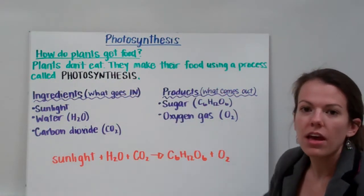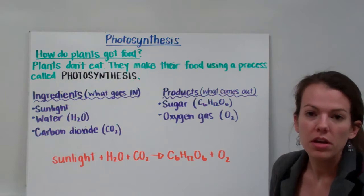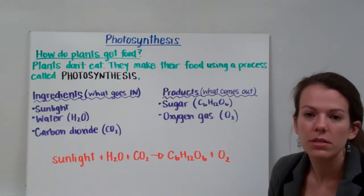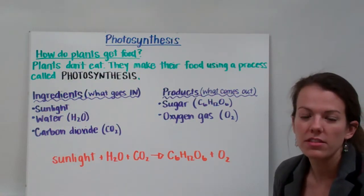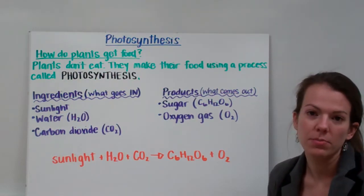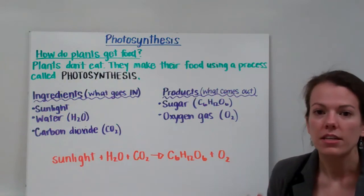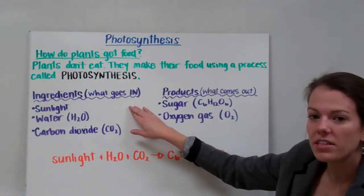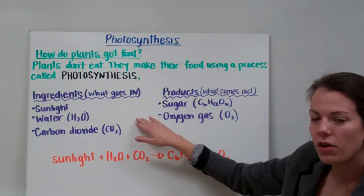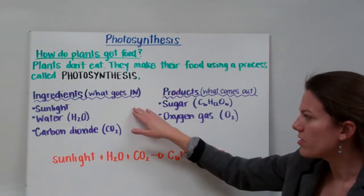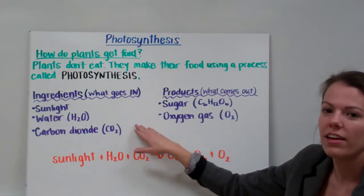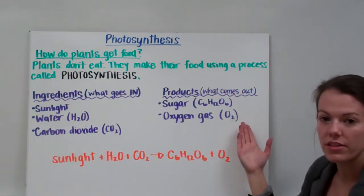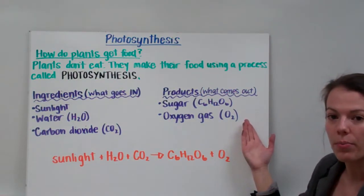Plants actually use sunlight to make their food, so they don't actually have to go and eat it themselves. Photosynthesis is the process plants use to get their food. There are some things that go in for photosynthesis — we call those our ingredients. The things that come out of photosynthesis are called our products.